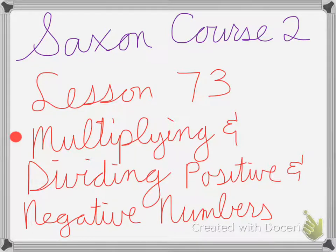Saxon Course 2 Lesson 73 is on multiplying and dividing positive and negative numbers.